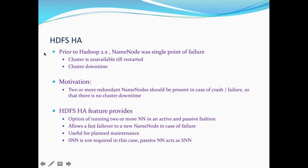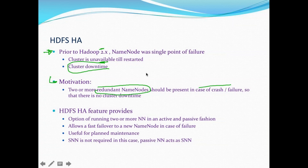Prior to 2.x, the name node was a single point of failure — the cluster was unavailable until restarted, causing cluster downtime. The motivation for HA is to have two or more redundant name nodes present in case of crash or failure. These redundant name nodes work in active and passive fashion, so if the active goes down the passive can take over all cluster activities and client requests with no cluster downtime.